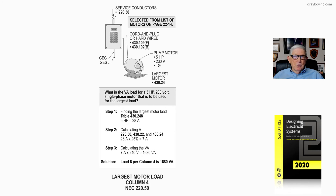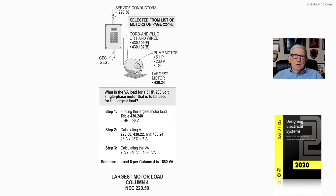Note: 220.50 as well as 220.14C — motors are so important that you have to get out of Article 220 to do your calculation, meaning to select your percentages to use. That's 430.22 for a single motor, and 430.24 for two or more motors, or two or more motors with other loads.